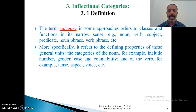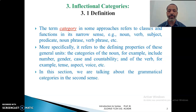And of the verb, for example, tense, aspect, and voice. In this section, we are talking about the grammatical categories in the second sense. So basically, the term category can be used to refer to two kinds of grammatical classes: the class which includes nouns, verbs, adjectives, and so on.